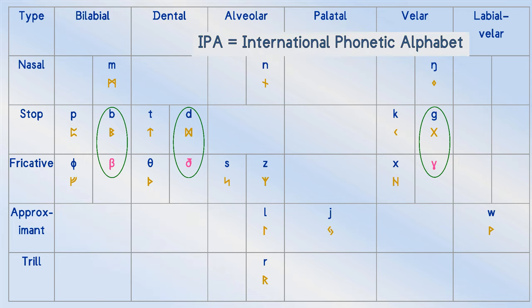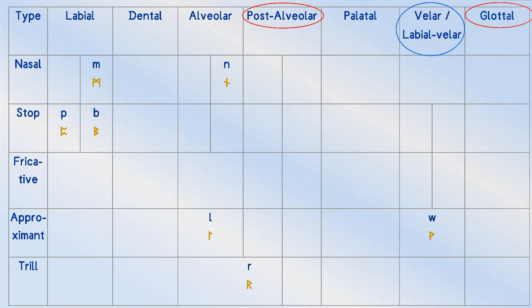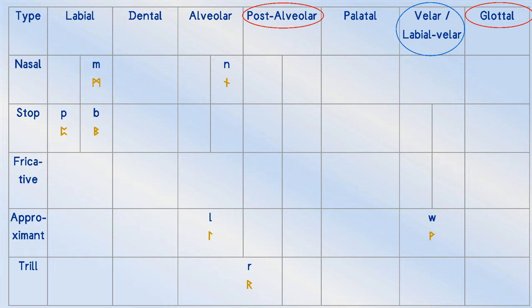Note that the circled sounds were allophones. To discuss Old English, we need to add two columns for post-alveolar and glottal sounds. You will also see on this chart that N, P, B, L and R have all stayed in the same place and remain written with the same runes.